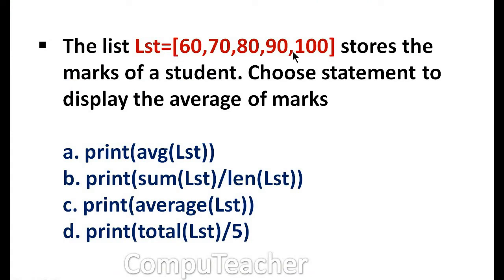The same list stores the marks of a student. Choose the statement to display the average of marks. Options: print avg(LST), print sum(LST)/len(LST), average(LST), total(LST)/5. Answer is option B, sum(LST)/len(LST). There is no direct function to find the average of values in a list. We calculate the average by dividing the sum by the length of the list — that is, the total number of elements.